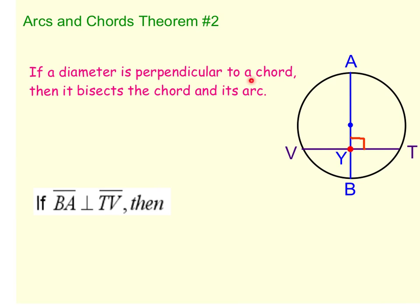So if a diameter is perpendicular to a chord, which we have here—the diameter AB perpendicular to the chord VT—then it bisects the chord and its arc. This diameter bisected, or cut in half, VT and the arc VT. So we know that VY has to be congruent to TY and arc VB has to be congruent to arc TB.